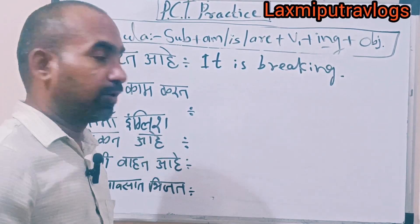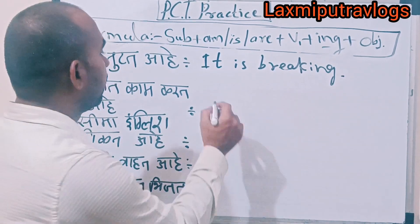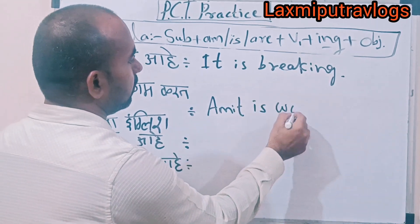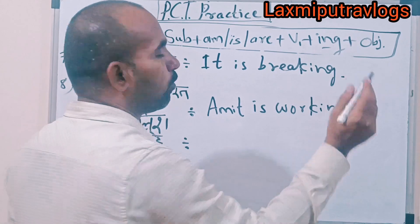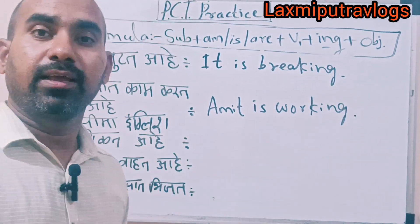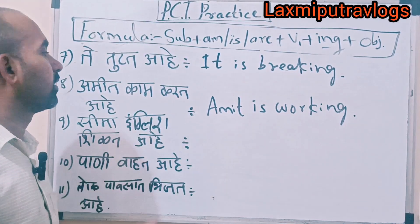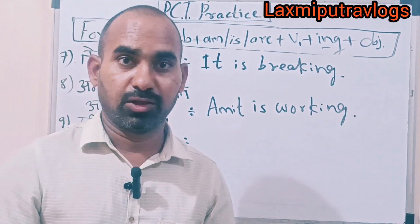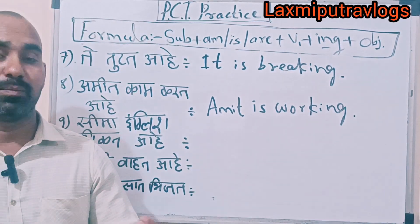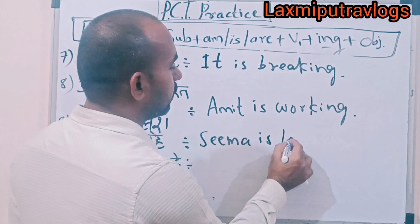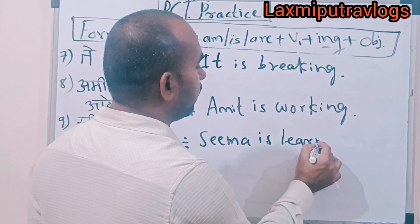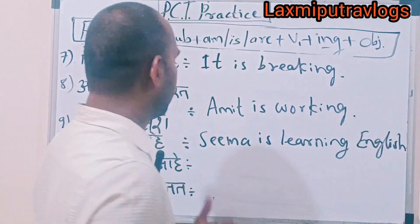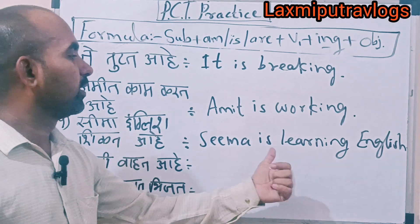Next sentence: 'Amit is working.' Then: 'Seema is learning English.' What is Seema doing? Seema is learning English.